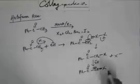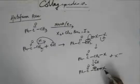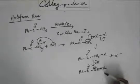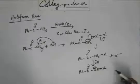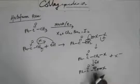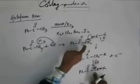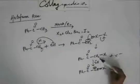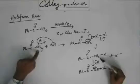Halogen will pull electrons from carbon because of being more electronegative. So apart from resonance, you also have an inductive effect of halogen operating. This anion is even more stable than the previous anion, meaning this hydrogen is even more acidic than the other hydrogen.